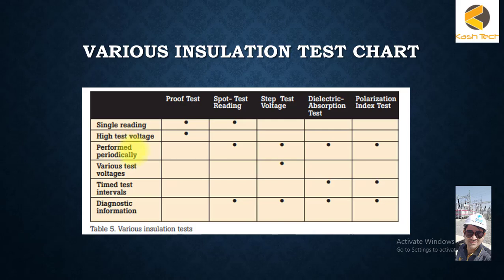During periodic testing, all four tests are done: spot testing, step voltage, dielectric absorption test, and polarization index. Step voltage and dielectric absorption or polarization index tests are time-interval based, meaning the diagnostic information depends on applying voltages over defined time test intervals.